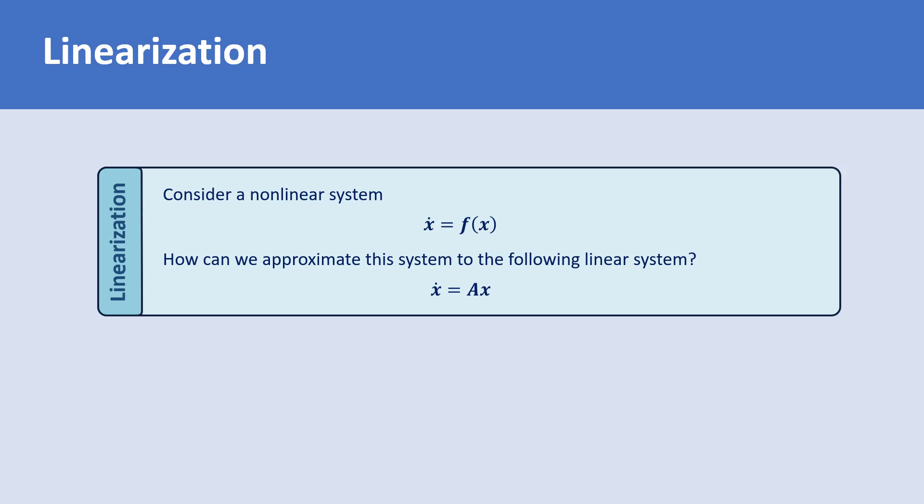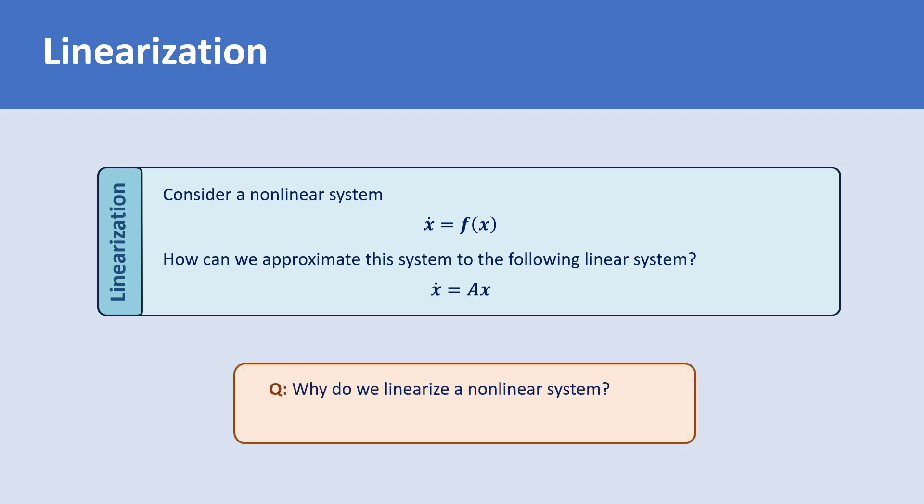Before we explain how to linearize a system, we first need to explain why we do this. Why do we want to approximate an accurate system to a system which is not accurate? The answer is that analyzing a nonlinear system might be very difficult, but if we could approximate a nonlinear system to a linear system, we can then use linear control theory tools to analyze or even design a controller for the system.